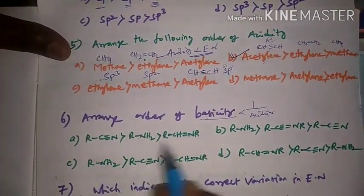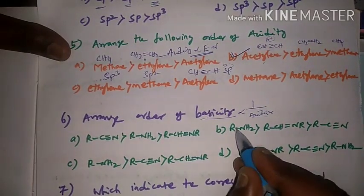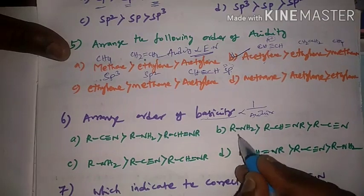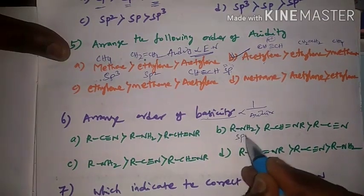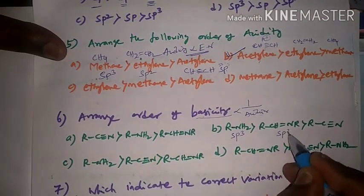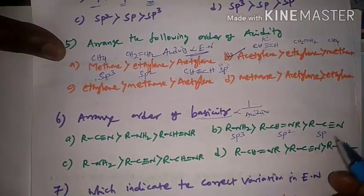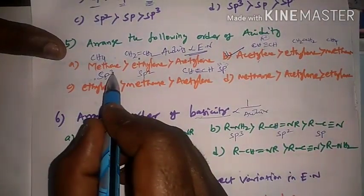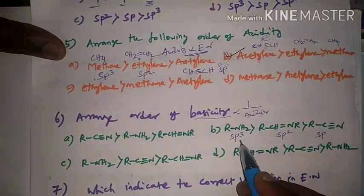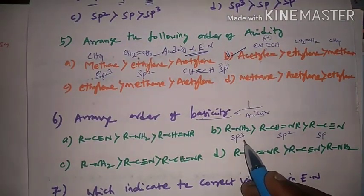Triple bond is sp, double bond is sp2, single bond is sp3. The triple bond (sp) gives the highest acidity, and single bond (sp3) gives the highest basicity.